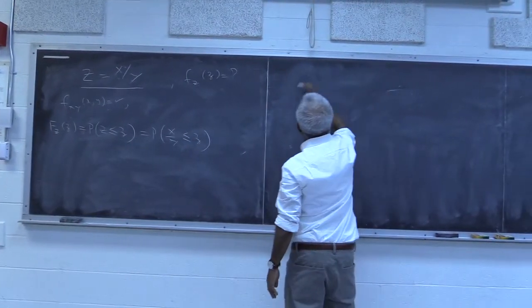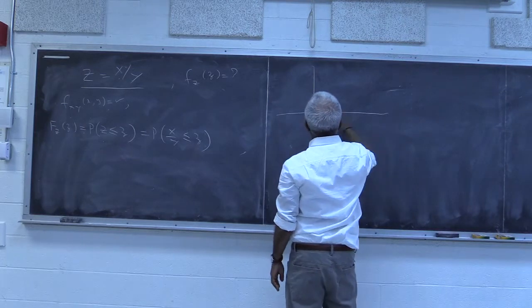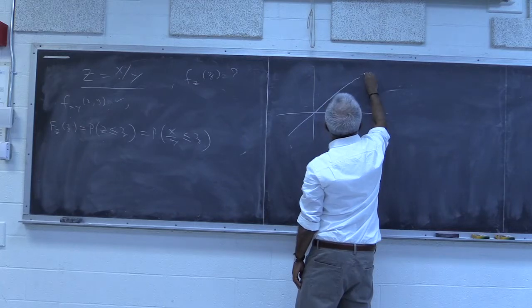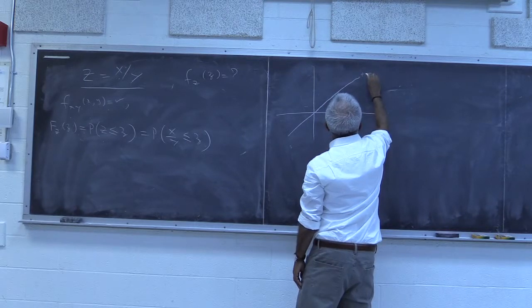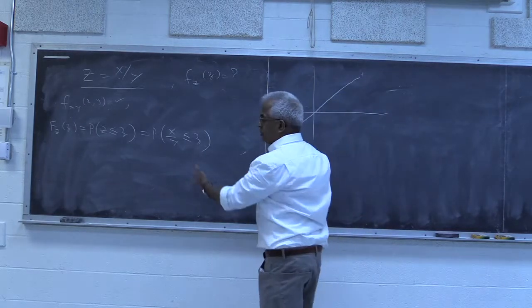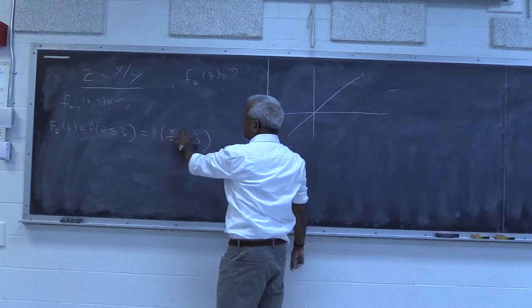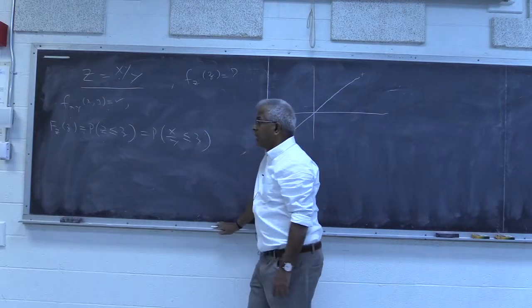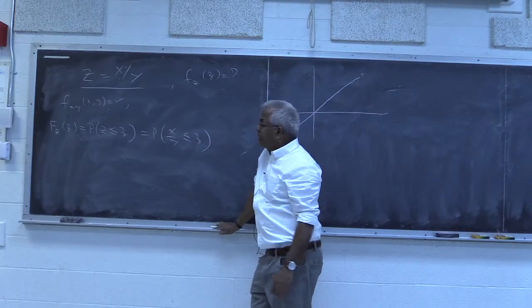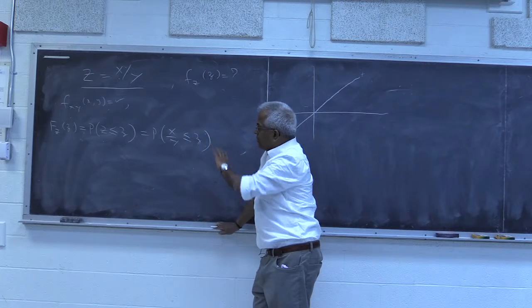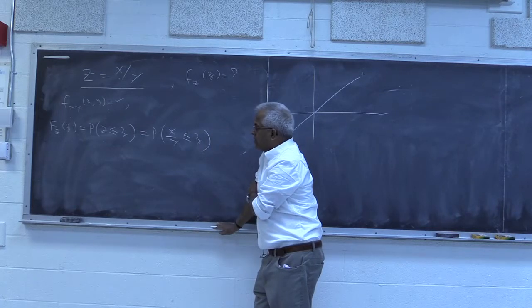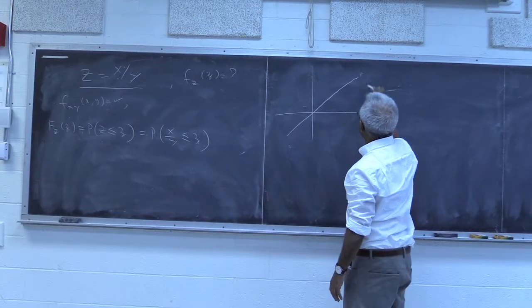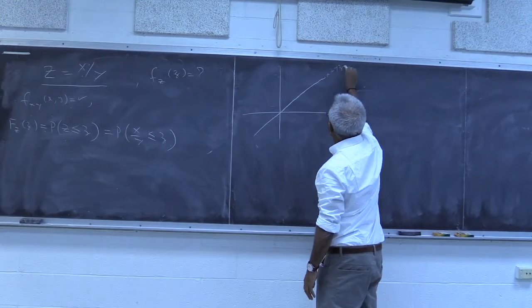To see what is going on, let's draw this line. If y is positive, then this inequality is the same as x less than or equal to yz. And if y is negative, the inequality will get flipped — that's x greater than yz. This is the line x equal to yz.